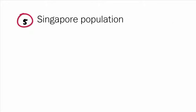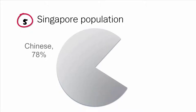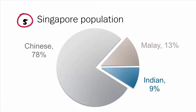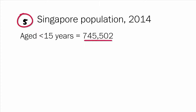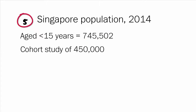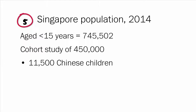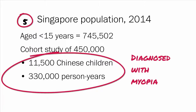Example 5, incidence rate. There are three main ethnic groups in Singapore's population. The largest is Chinese, which makes up 78% of the population, then Malay at 13%, and Indian at 9%. In 2014, the population aged under 15 was 745,502. A cohort of 450,000 was followed up from January to December 2014.